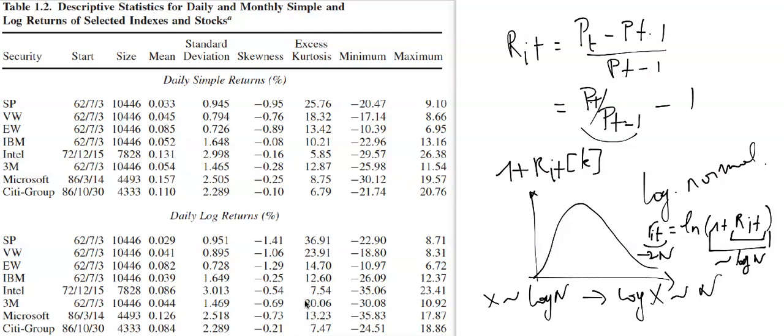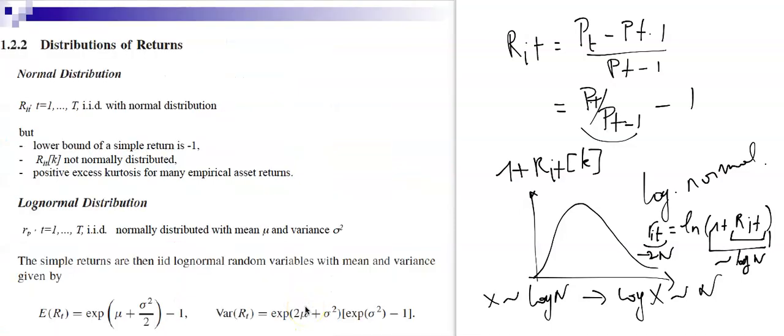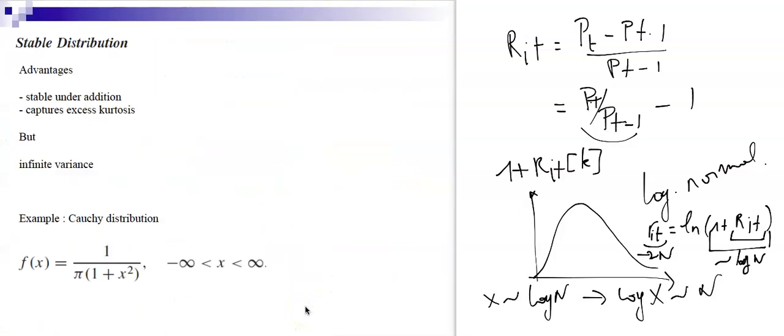However, we still have the problem of positive excess kurtosis. From the data table, log returns also display very high excess kurtosis. If we assume r̃_t is normally distributed, this does not fit the strongly positive excess kurtosis observed in practice. So we need other approaches.